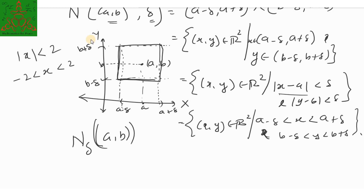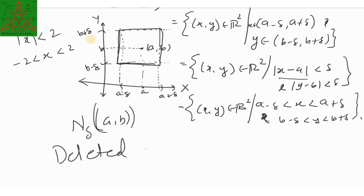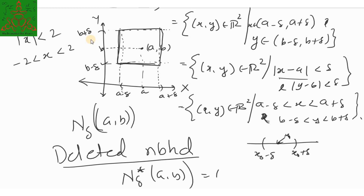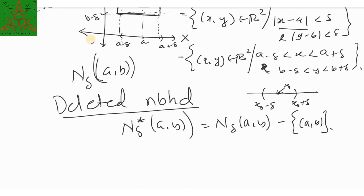The next definition is the deleted neighborhood, written in short as NBHD. The deleted neighborhood is similar to what you defined in 12th standard for R: if the neighborhood is (x₀ minus delta, x₀ plus delta) and you remove the center point x₀, you get the deleted neighborhood. Here, the deleted neighborhood is denoted N_delta* (A, B), which is N_delta(A, B) minus the point (A, B) — you remove the center point from the neighborhood.